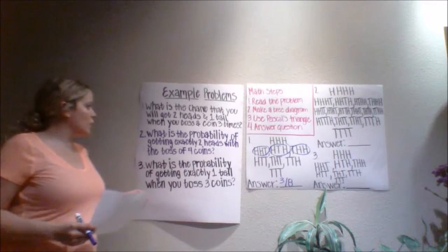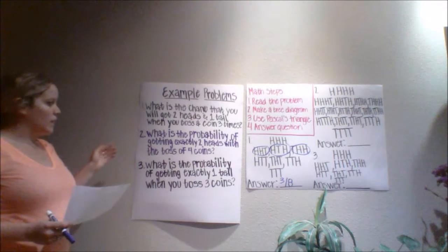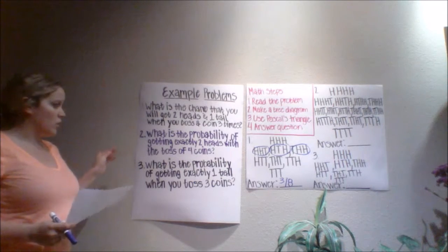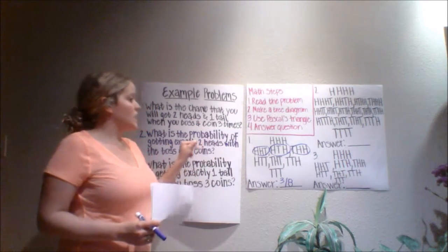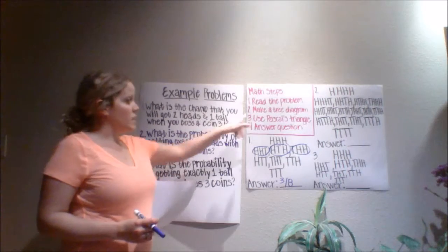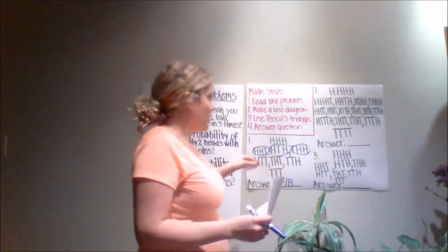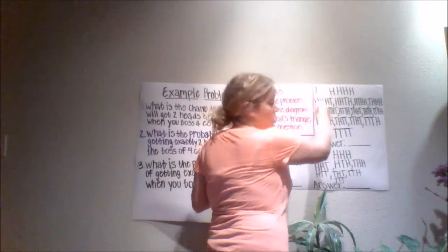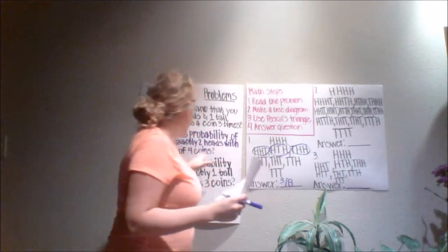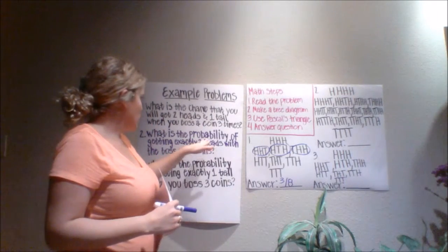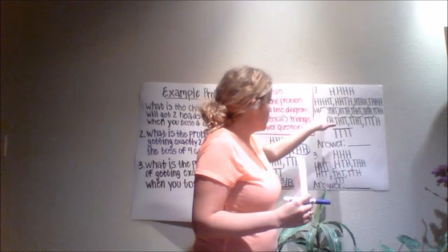Our second question is: what is the probability of getting exactly two heads with the toss of four coins? That's our first step — we've read the problem. Our second step is to make a tree diagram. Here is the problem that we just worked together, and so now we have to look at what exactly gives us two heads with a toss of four coins.